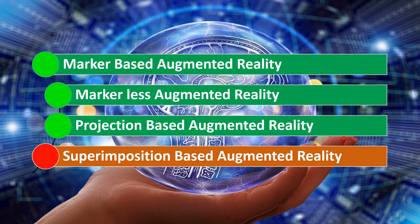Superimposition-based augmented reality superimposes the real world object with a virtual object. For example, by using an IKEA app, you can scan their catalog to virtually place their products, like furniture, at your home. This allows you to view how the product would match with the surroundings at your home and helps you to make informed buying decisions.